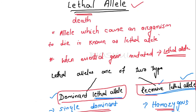This is all about lethal alleles. I hope this video helped you understand what a lethal allele is, what dominant and recessive lethal alleles are, and why dominant lethal alleles are mostly not found in the population. If you liked this video, please share it with your friends and don't forget to subscribe. See you in the next video — keep learning!